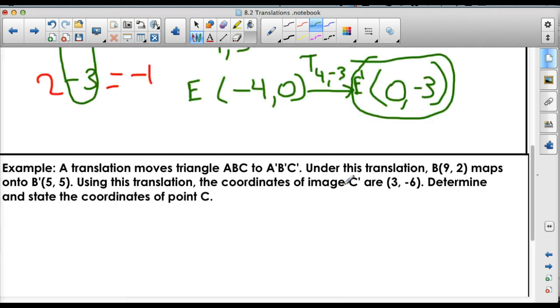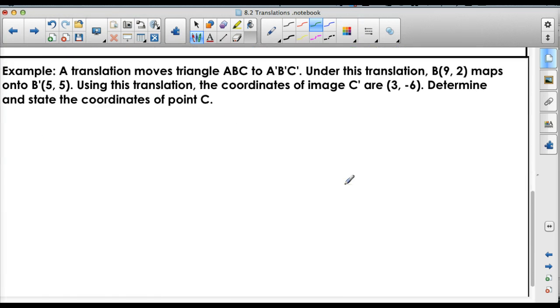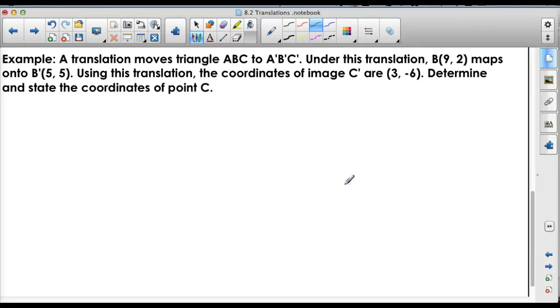Translations are pretty simple. This one, though, could be a little tricky. I'm pretty sure you could do it on your own, but I'll help you out a little bit. It says a translation moves triangle ABC to A prime, B prime, C prime, right? Under this translation, B (9, 2) maps onto B prime (5, 5). So it moves. Using this translation, the coordinates of the image are (3, -6). Determine and state the coordinates of point C.